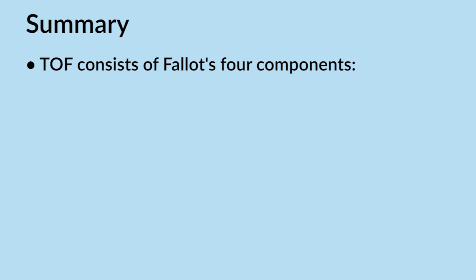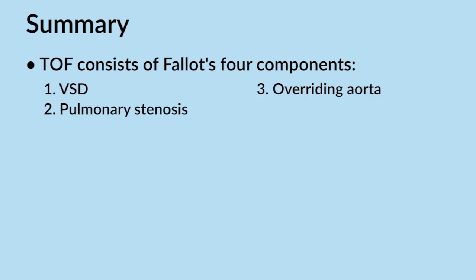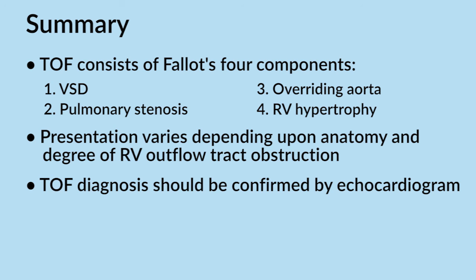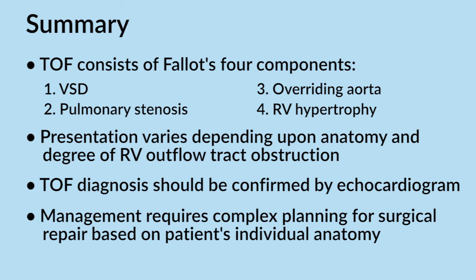Summary. Tetralogy of Fallot is a congenital cardiac defect consisting of four components: a ventricular septal defect, pulmonary stenosis, overriding aorta, and right ventricular hypertrophy. Patient presentation can vary depending upon unique anatomy and the degree of obstruction to the right ventricular outflow tract. While patients may appear cyanotic, present with a boot-shaped heart on chest X-ray, or have an audible systolic murmur, diagnosis should be confirmed by echocardiogram. Patient-specific factors — including anomalous coronary artery anatomy and degree of pulmonary stenosis — can complicate management, and complex planning that accounts for individual anatomy is required prior to surgical repair.